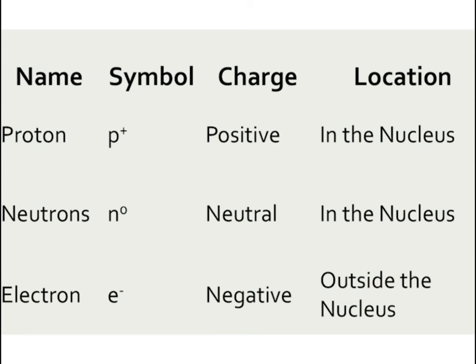So let's take a quick look at a summary here. Protons: positive in the nucleus. Neutrons are neutral in the nucleus. Electrons are negative outside of the nucleus.